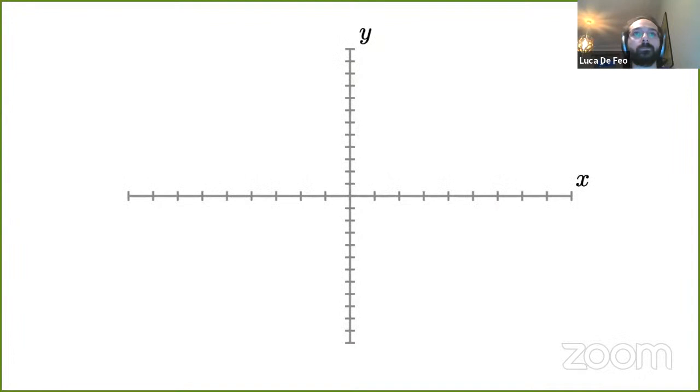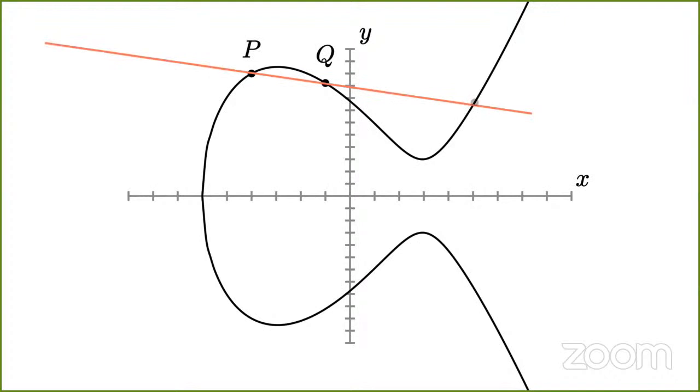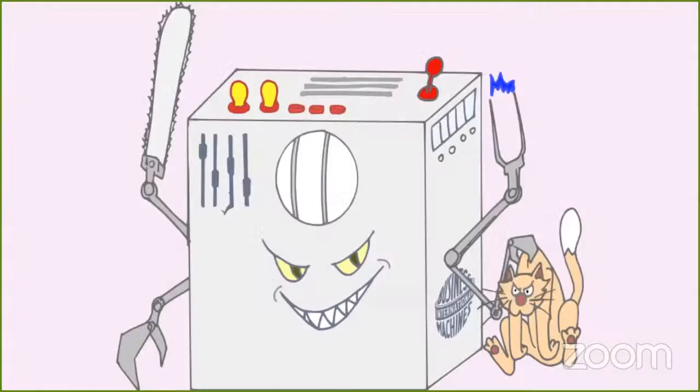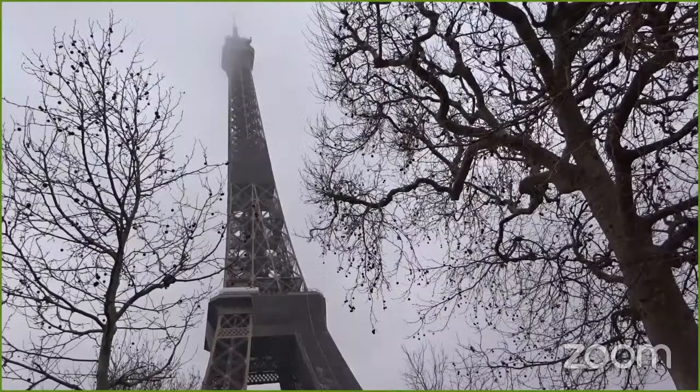You all know that contemporary cryptography lives and dies by the elliptic curve. Elliptic curves give us all we could hope for: a hard discrete logarithm problem, reasonable speed, compact parameters, well-understood side-channel countermeasures, and even pairings. But all good things must come to an end, and you all have heard of the menace looming over elliptic curves and discrete logarithm in general: the quantum computer.